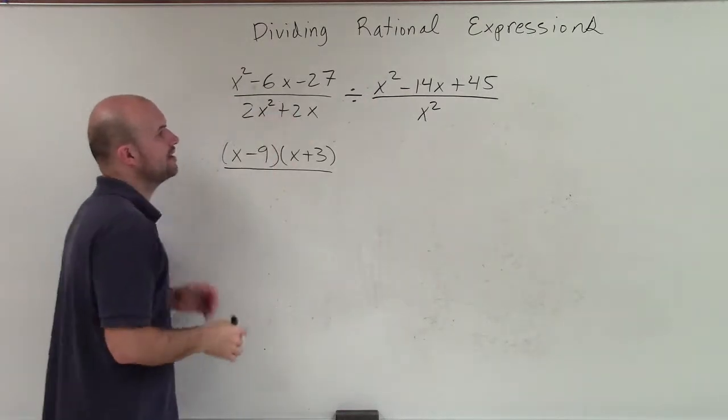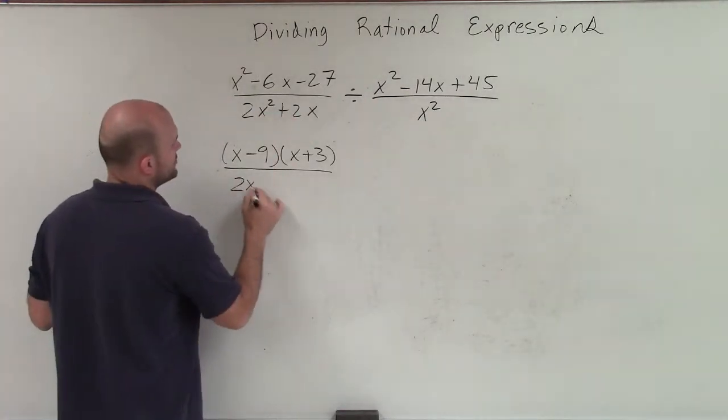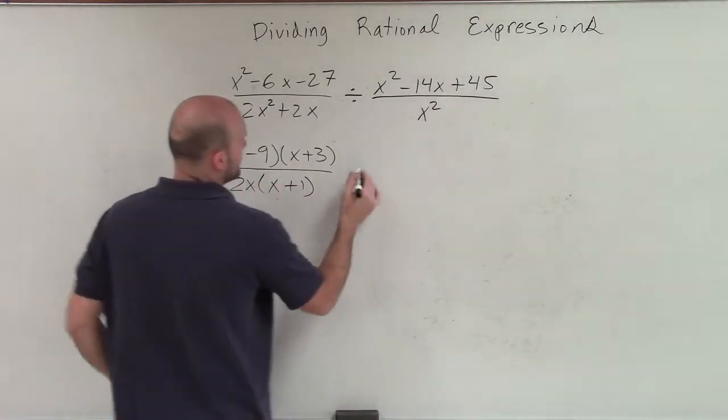Here I have 2x squared plus 2x. I see what common term can I factor out. Well, I can factor out a 2x. That's going to leave me with an x plus 1.